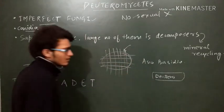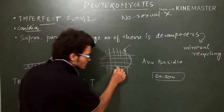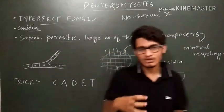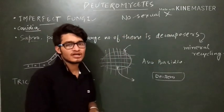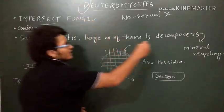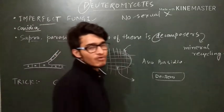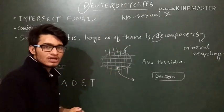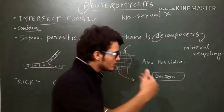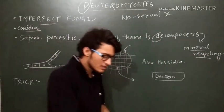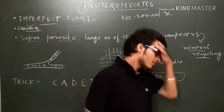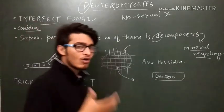They break down organic matter into smaller components and constituent elements, which are then returned to the environment for recycling. For example, nitrogen must be converted from organic compounds into its elemental form. That work is done by Deuteromycetes — they decompose organic compounds and convert them into constituent ions and atoms, which can then be utilized by other organisms. So Deuteromycetes are very helpful in mineral recycling and the decomposition process.